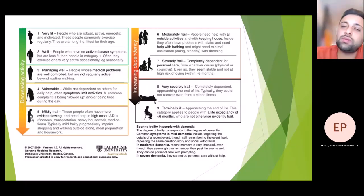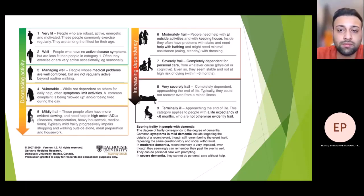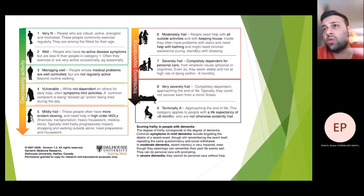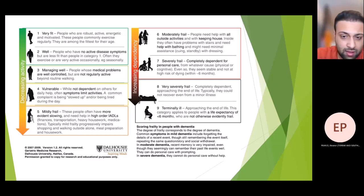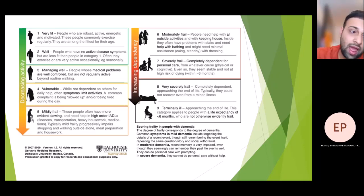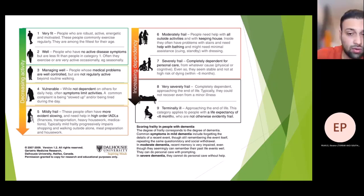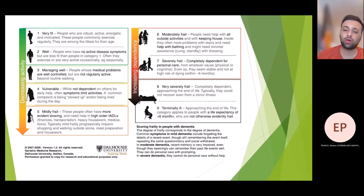Score six is moderately frail — needing help with everything including keeping the house, bathing, and minimal assistance with dressing. Score seven is severely frail — completely dependent, with carers coming four times a day or a full-time carer. Score eight is very severely frail — completely dependent and approaching end of life, where even a minor illness such as flu may not be survived. Score nine is terminally ill — a terminal condition with life expectancy of no more than six months.